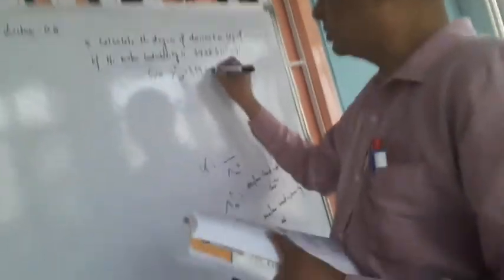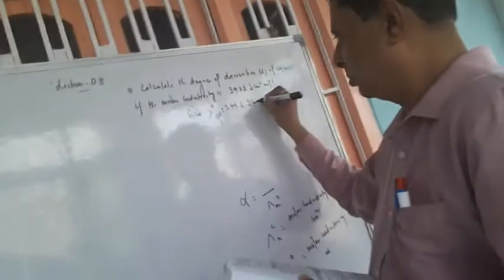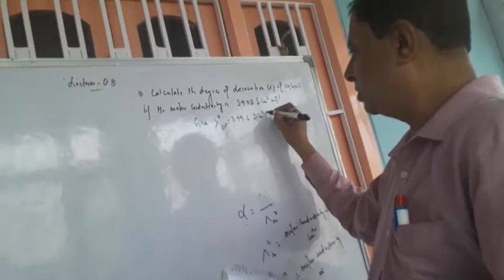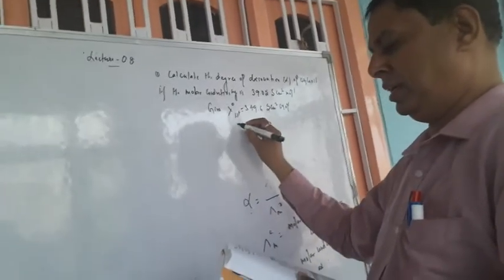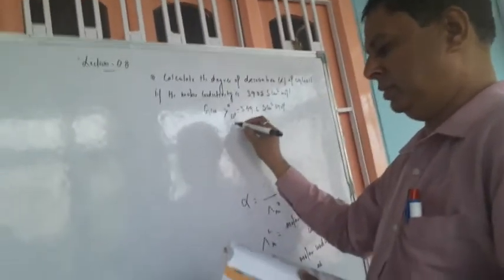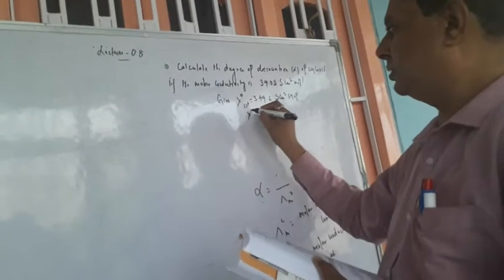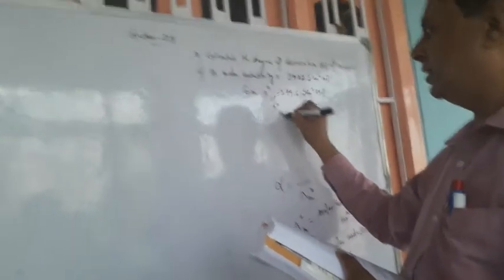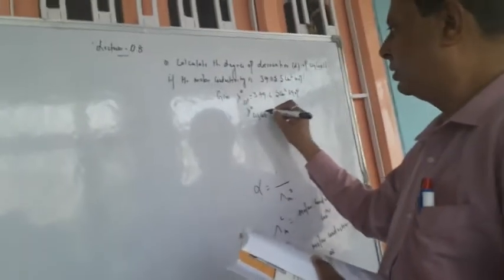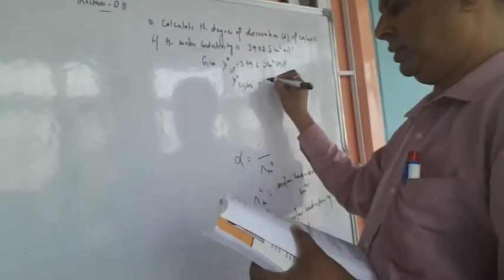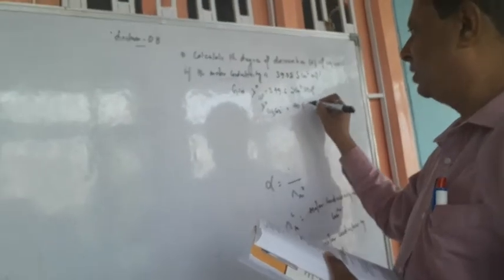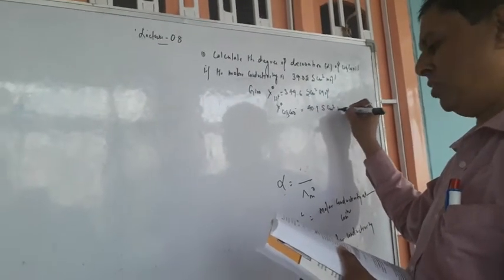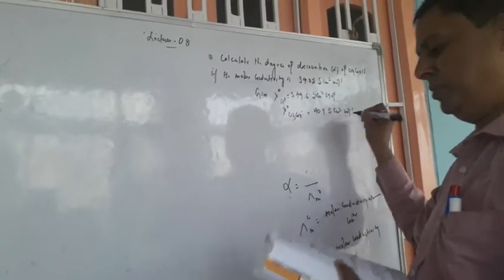Given: lambda standard for H+ is 349.6 siemens per centimeter square per mole, and for acetate ion it is 40.9 siemens per centimeter square per mole.